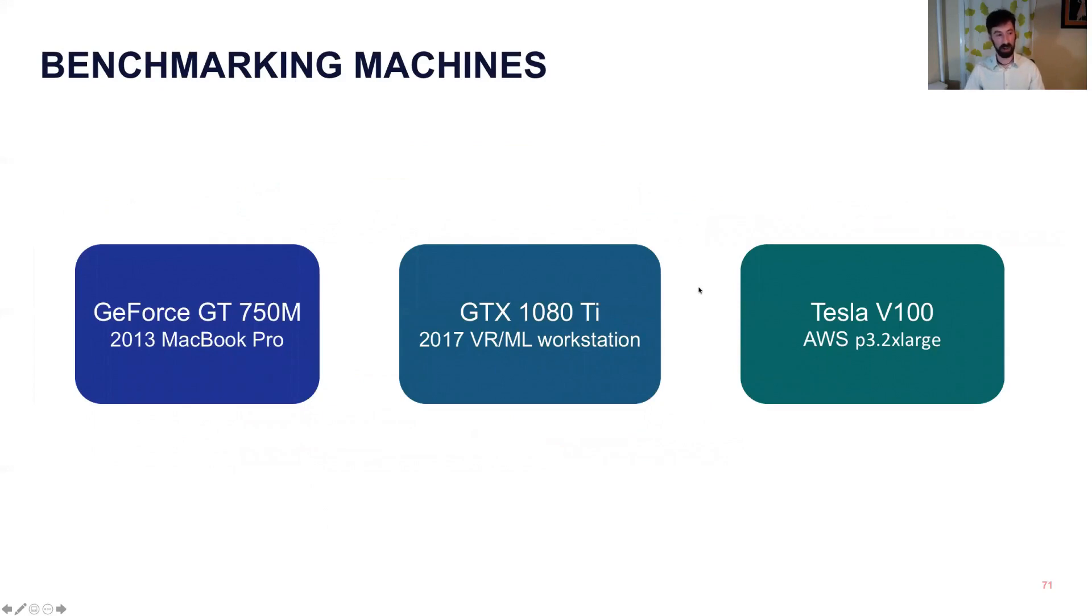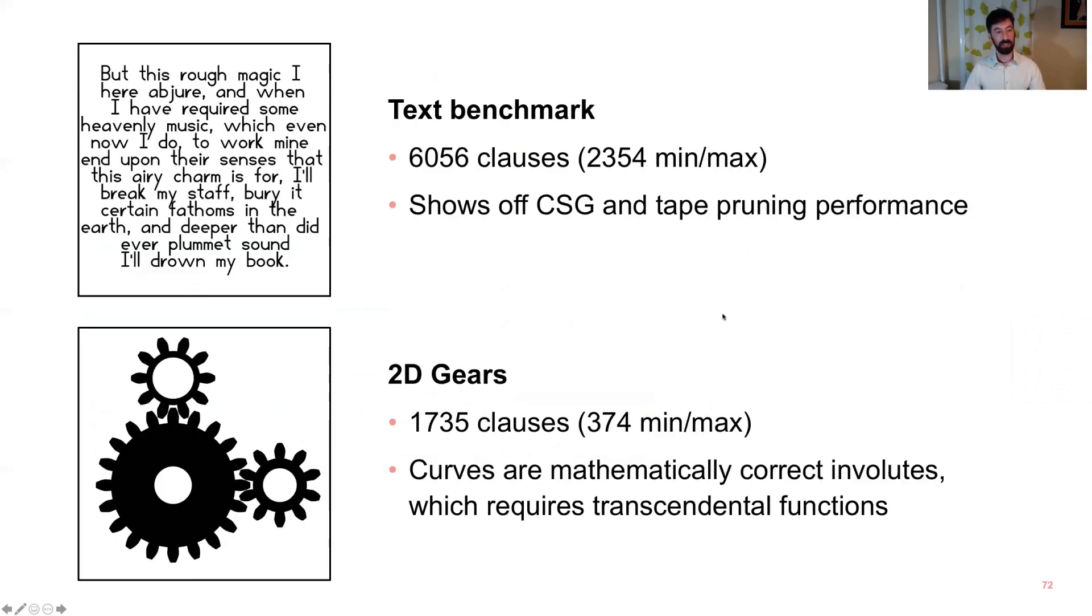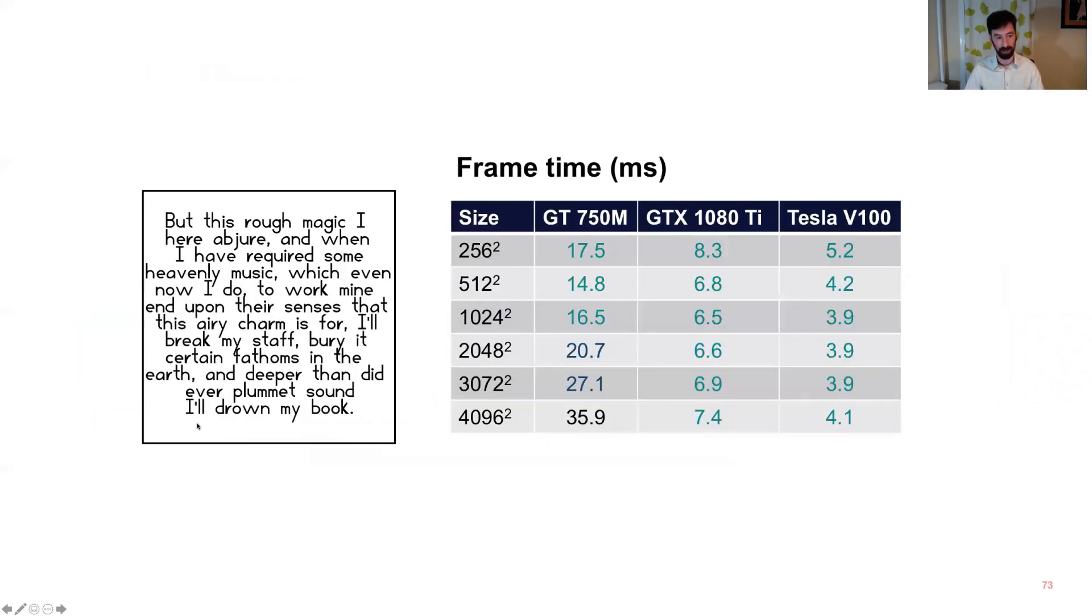We benchmarked this on three machines, my aging MacBook Pro, a relatively recent workstation, and the biggest GPU I could get my hands on on AWS. And we benchmarked in 2D with two models, so we have the text benchmark, which is very much a best-case scenario, lots of CSG, and then a 2D gears model, which has fewer clauses but has mathematically perfect involute curves if you look along the edges.